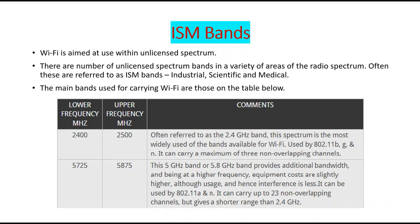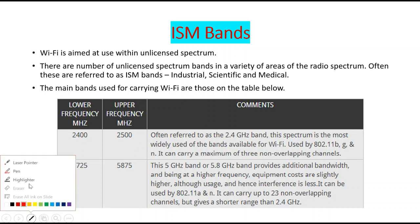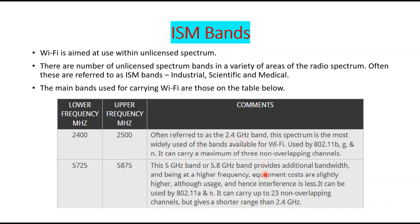Basically two types of bands are there: one is called 2.4 GHz and the next one is called 5 GHz. If you look into 2.4 GHz, the lower frequency is 2400 MHz and the upper frequency is 2500 MHz — that is the reason we refer to it as the 2.4 GHz band. In this spectrum, 802.11b, g, and n standards are operating.